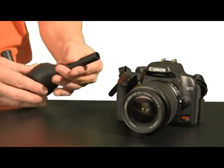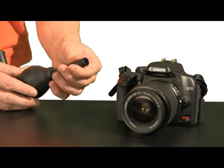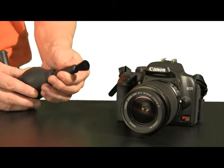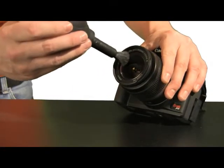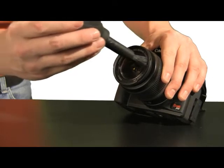Next, use the soft lambs wool brush, simply accessed by sliding down the brush cover, to remove any stubborn debris the blower may have missed and make sure any particles around the edge of the lens are completely removed.